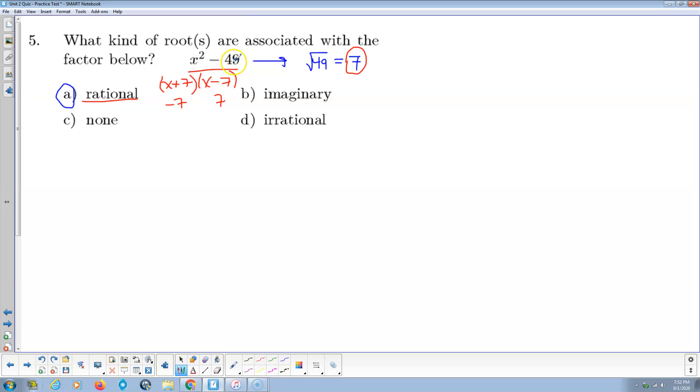But since 49 is a perfect square, that says rational. And if this was a plus sign here in the middle, that would make that imaginary because it wouldn't be a difference of squares. It'd be that special form, x² plus k, I talked about in a couple of the videos. So it's like, hey, that says imaginary all over it.